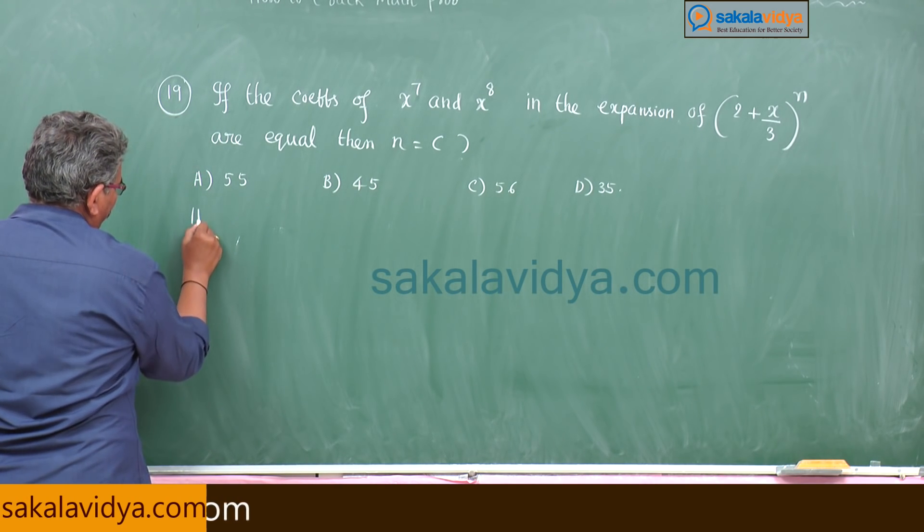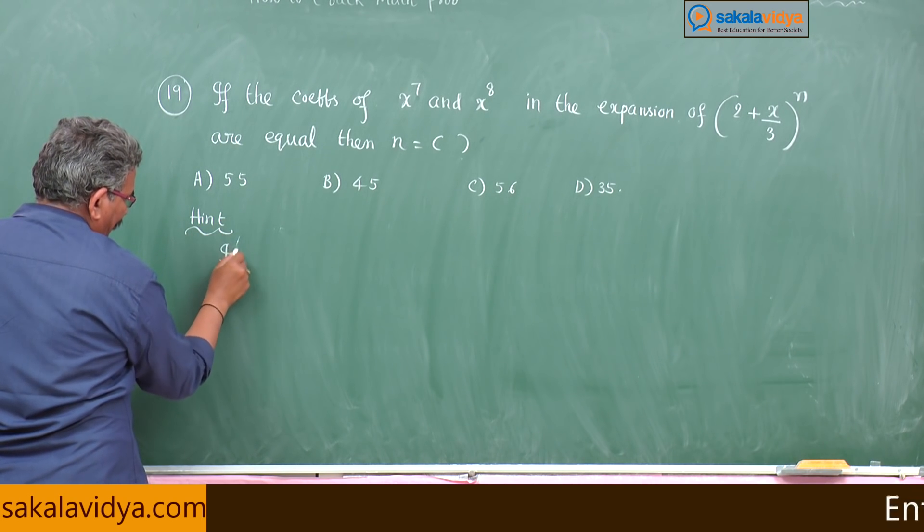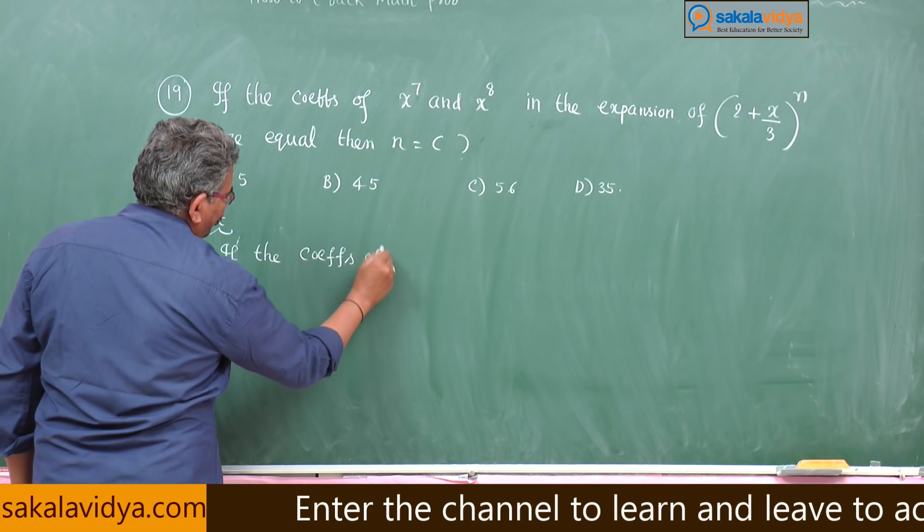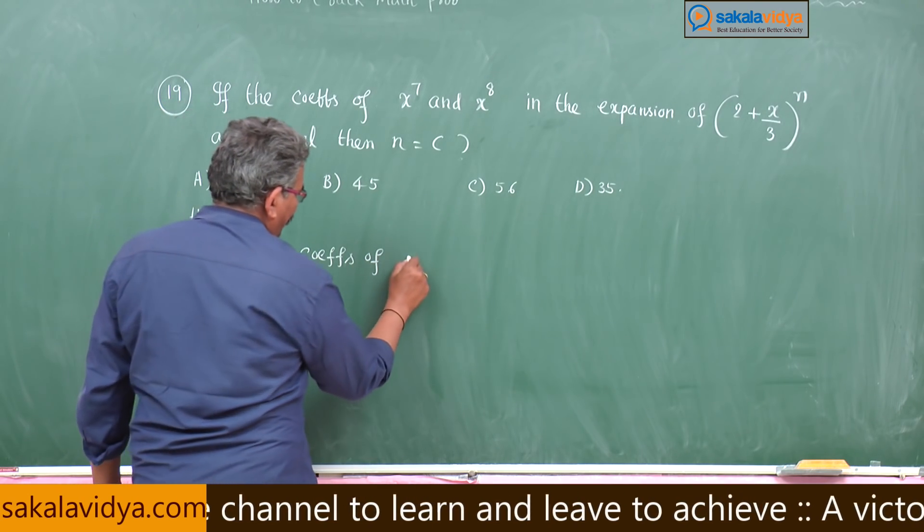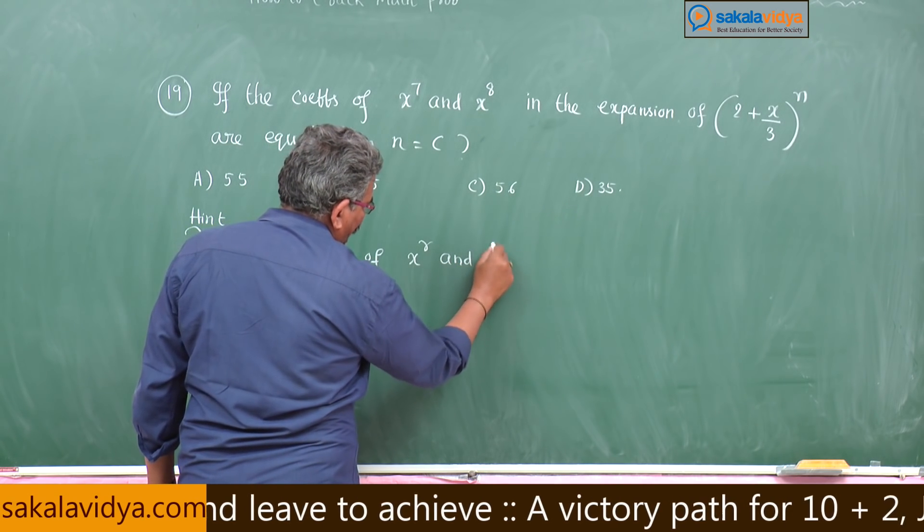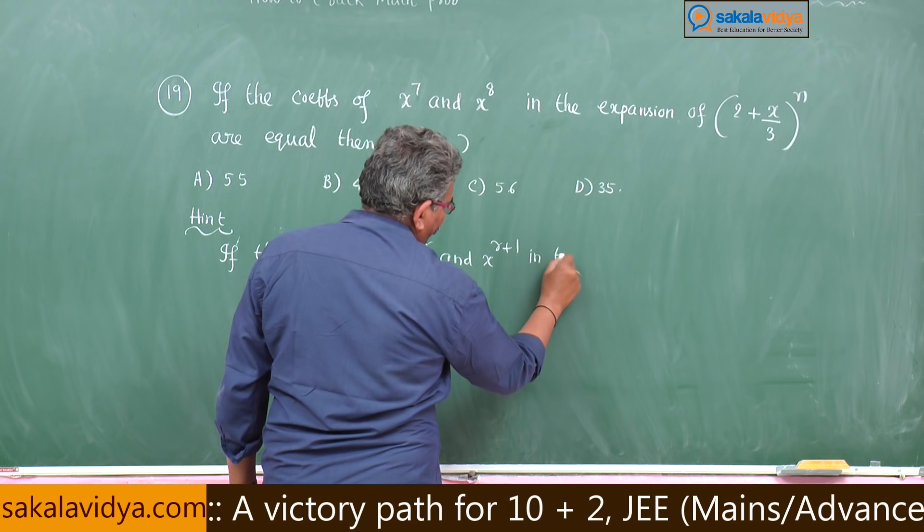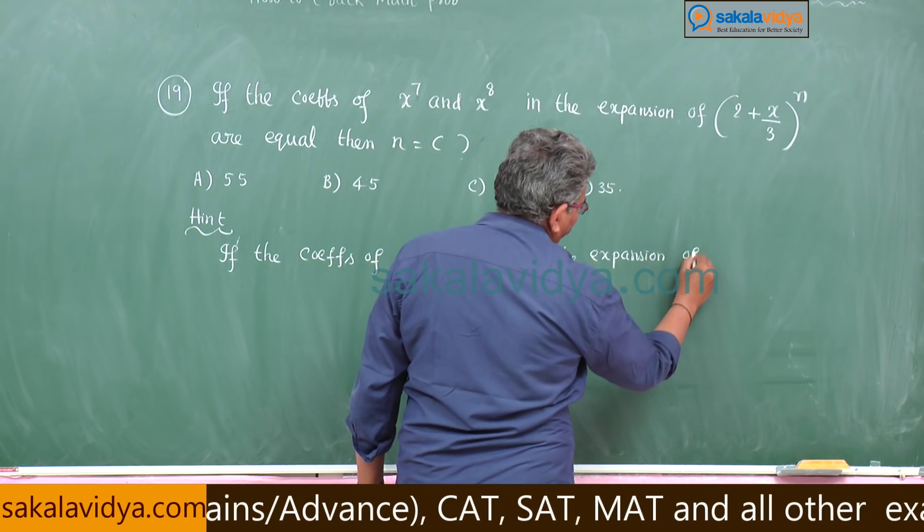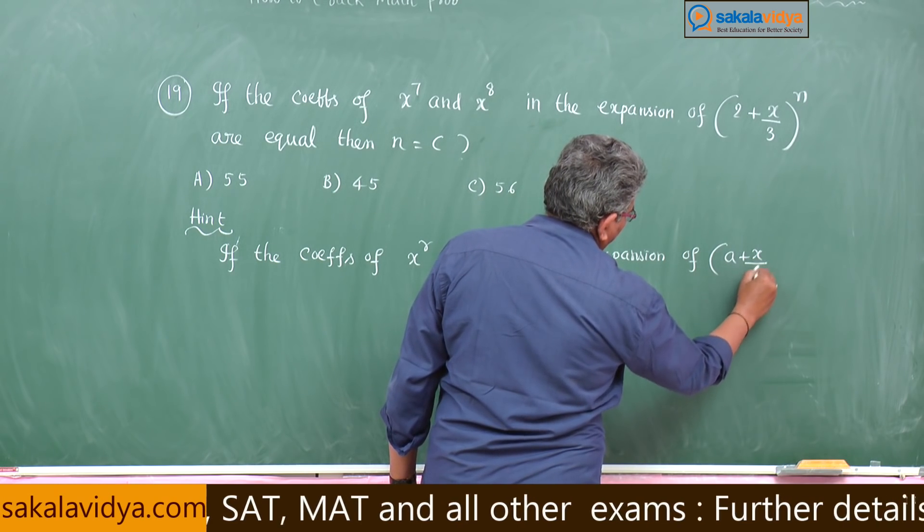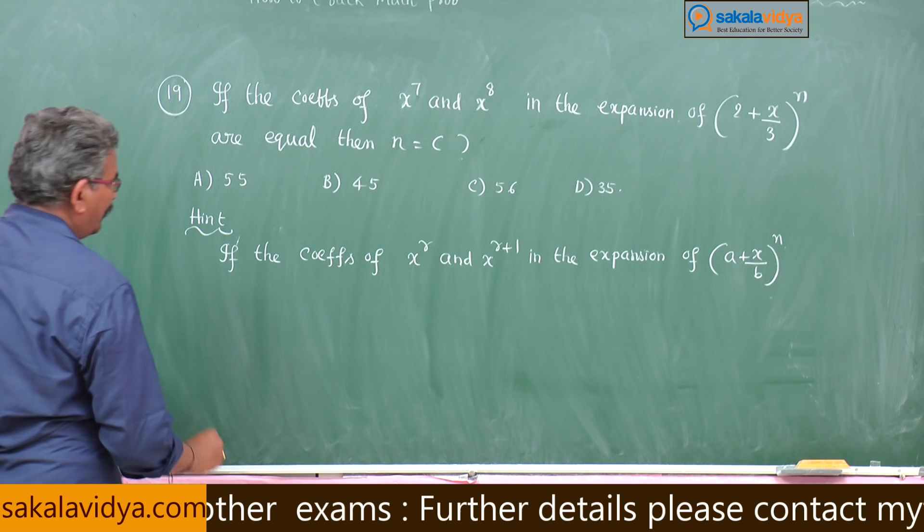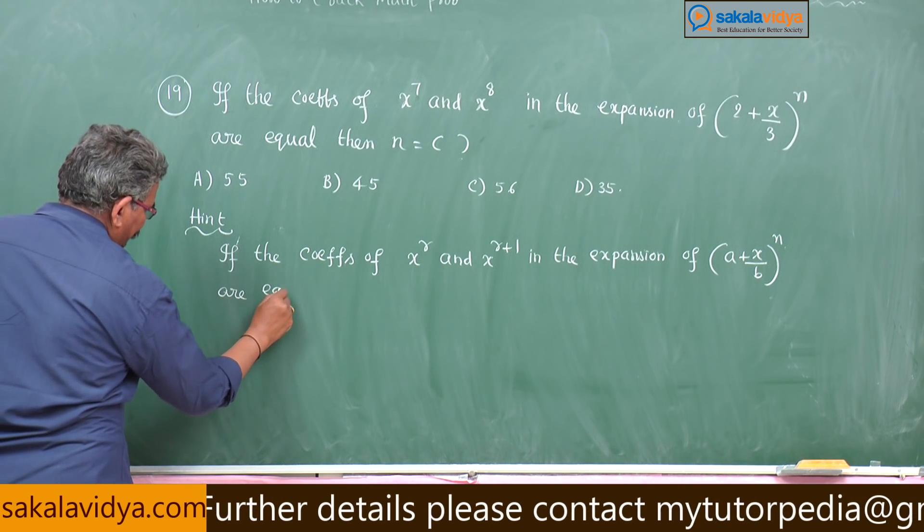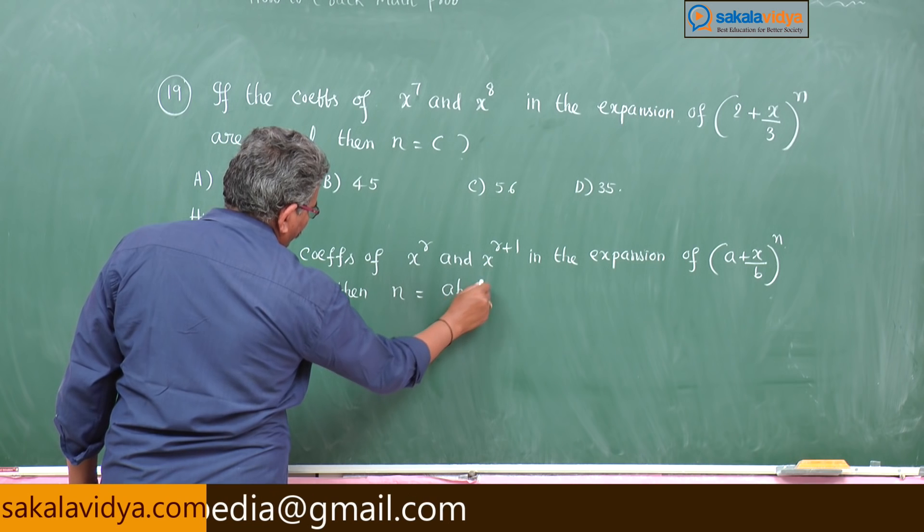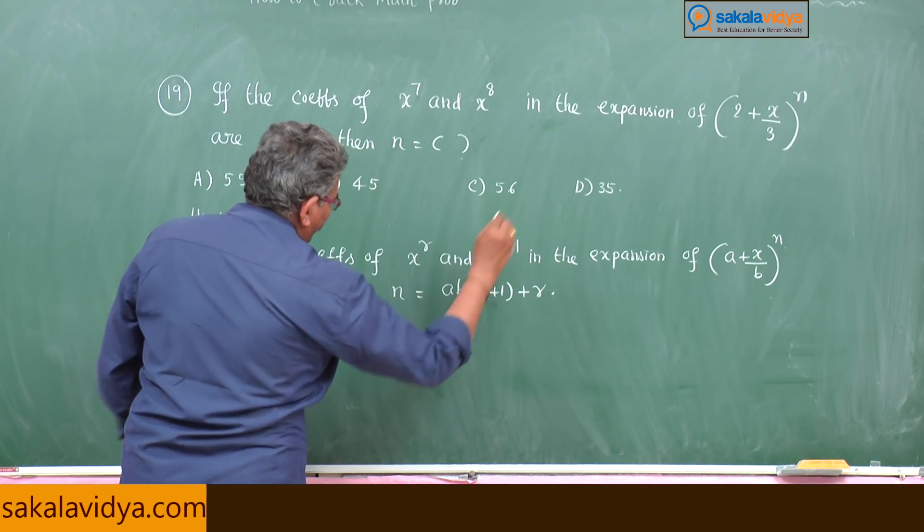So now hint right on, if the coefficients of x to the power of r and x to the power of r plus 1 in the expansion of a plus x by b whole to the power of n are equal, then n equals to a b into r plus 1 plus r, you remember the shortcut.